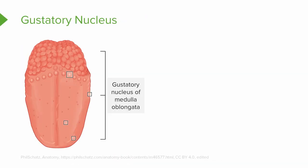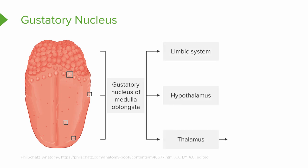The nerve impulses propagated by these cranial nerves go to the gustatory nucleus of the medulla oblongata. From there, some impulses go to the limbic system and the hypothalamus, leading to our emotional response to certain tastes, and some go to the thalamus. From the thalamus, they travel to the primary gustatory area of the cerebral cortex, allowing us to perceive and discriminate different tastes.